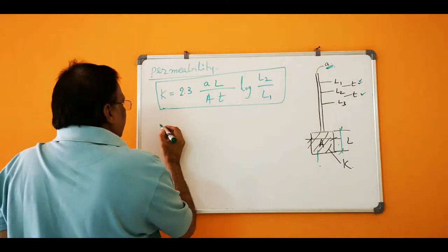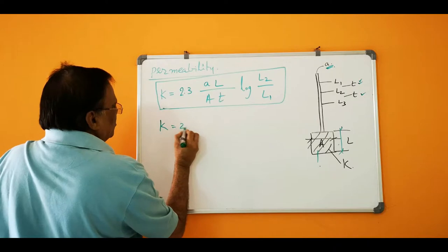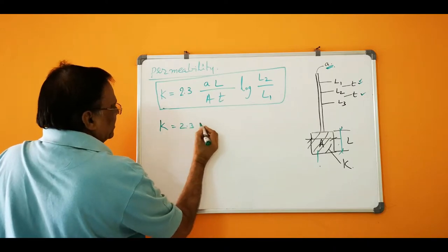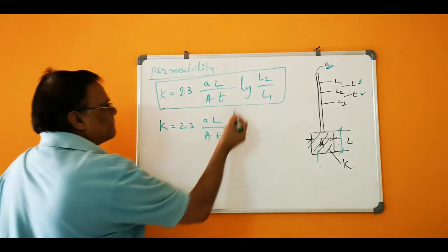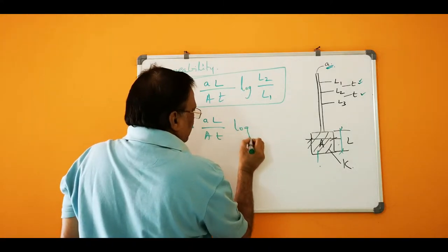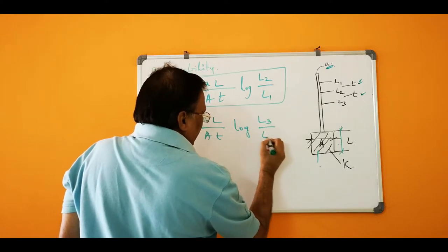So it is given that K is equal to 2.3 A L by A into T log L3 by L2.